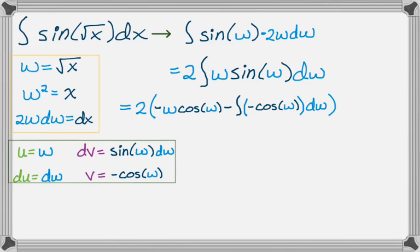So this is negative 2w cosine of w, and then we're integrating cosine really, because it's minus the integral of negative cosine, which is plus the integral of cosine, and the integral of cosine is just sine, because the derivative of sine is cosine. But don't forget the 2 that we're distributing, and then plus c.